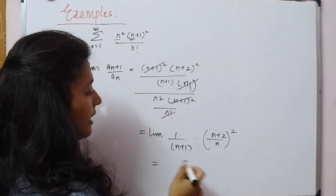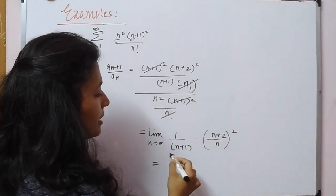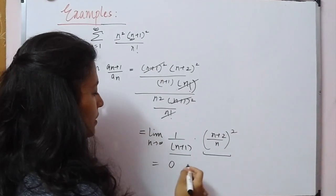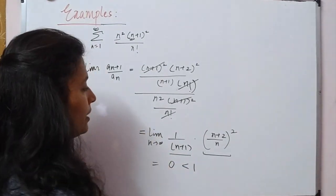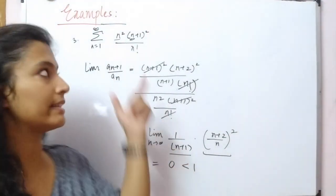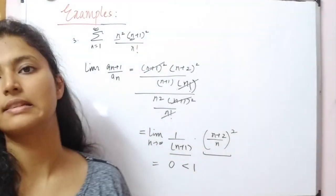As n goes to infinity, this term becomes 0. Therefore we get lim(aₙ₊₁/aₙ) = 0, which is less than 1. This implies that this series is also convergent.